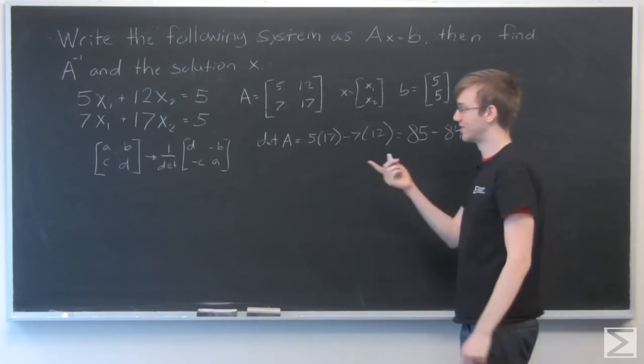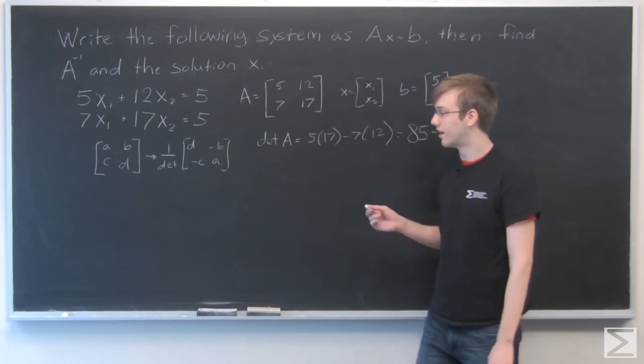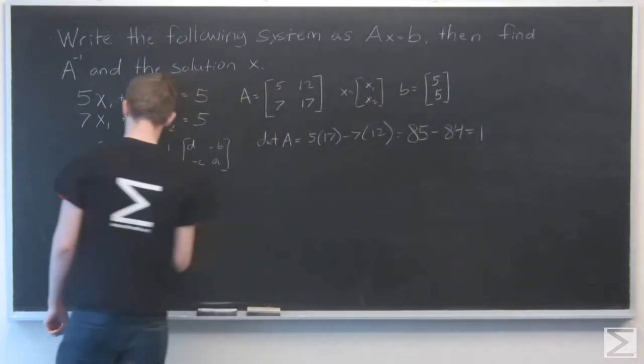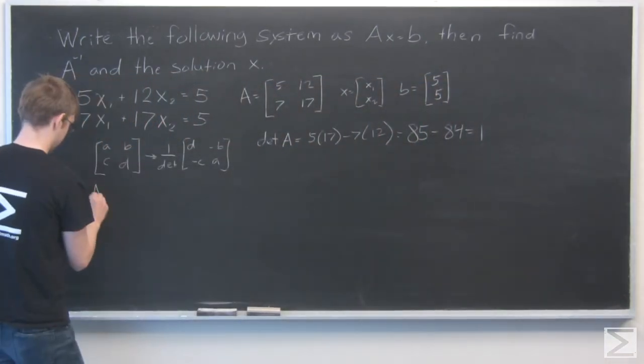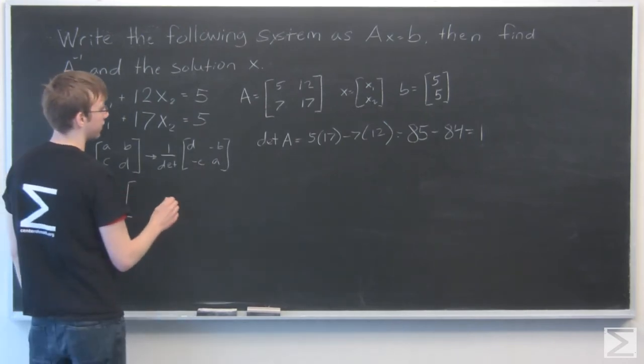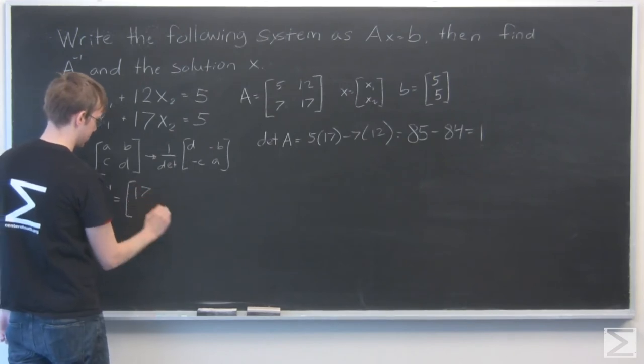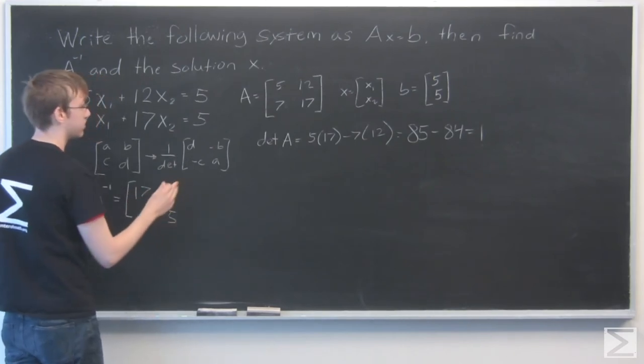That's cool, we don't really have to divide by anything in this case. So now let's write A inverse. 17 and 5 are switched around, and 7 and 12 become negative.